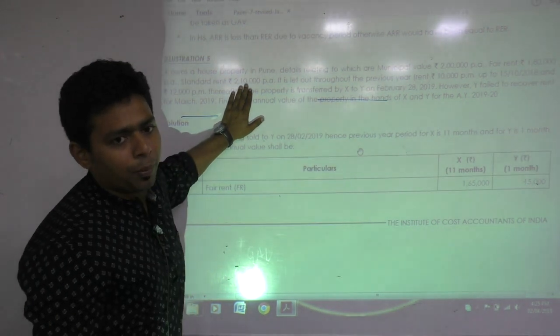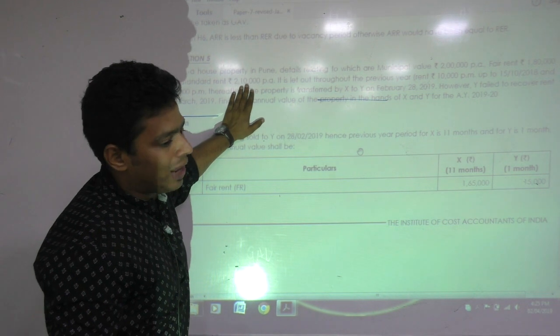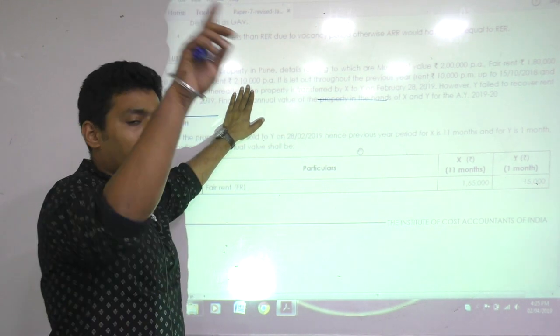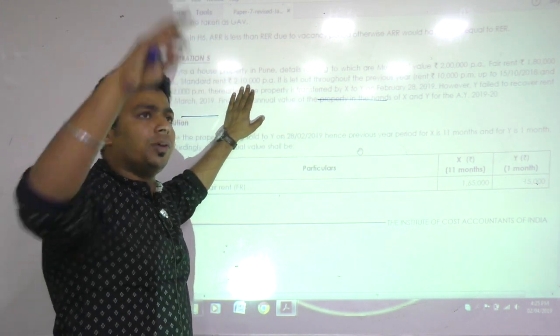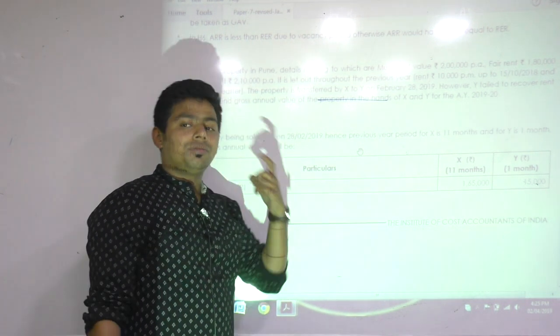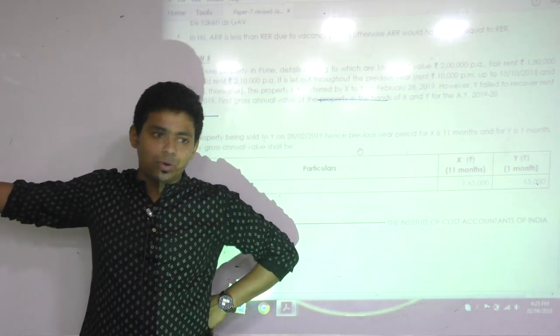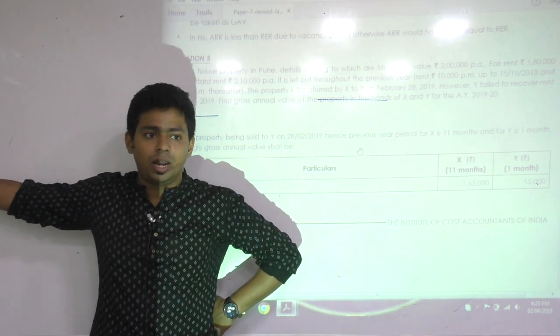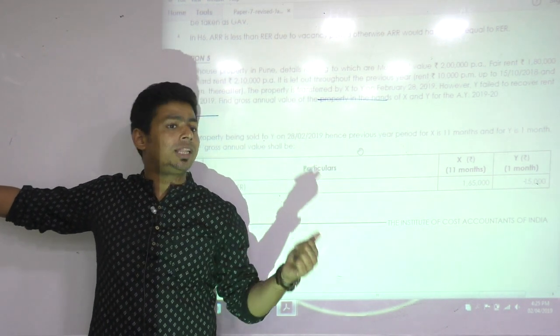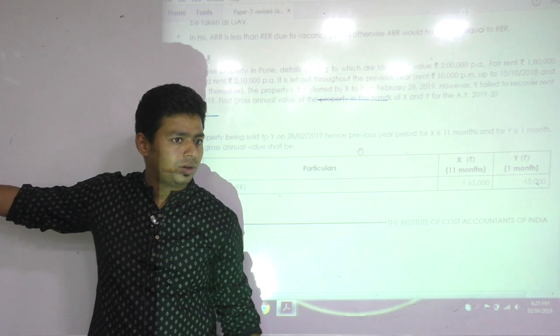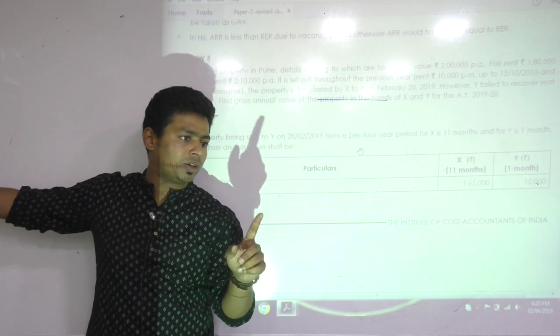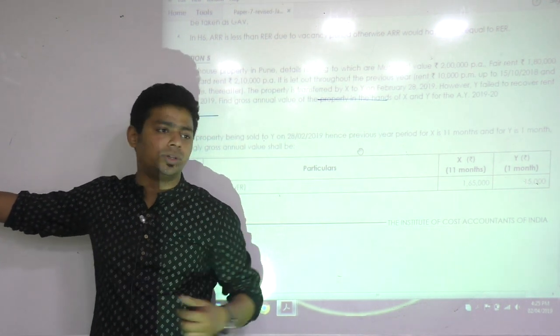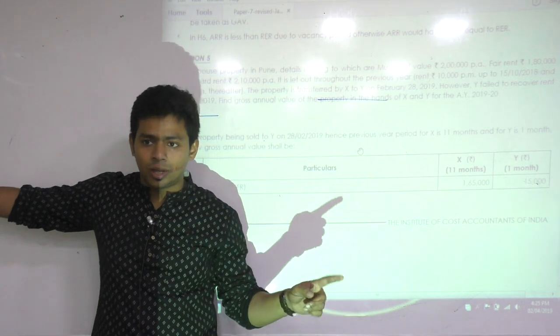Compare with standard rent. Standard rent is 2 lakh 10,000 for whole year. Proportionate 11 months: 1,92,500. 1,92,500 or 183,333 - whichever is lower. So what is my expected rent? 183,333. Now we have to compute actual rent. Actual rent up to 28 Feb. Up to September: 10,000 multiplied by 6, that's 60,000. October month was 11,000, so add 11,000.